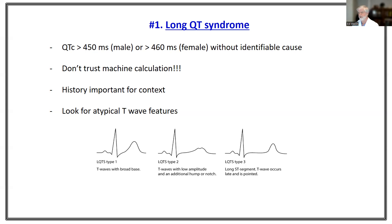For example, in LQT type 1, a potassium channel defect, the T wave tends to have a very broad base. In LQT type 2, another potassium channel defect, the T wave tends to be low amplitude with bumps and notches. In LQT type 3, there's a long flat ST segment with a terminal T wave that is late and very pointed. These are not absolute — there's no substitute for proper genotyping — but true long QT syndrome will have T wave abnormalities that can be helpful in diagnosis.